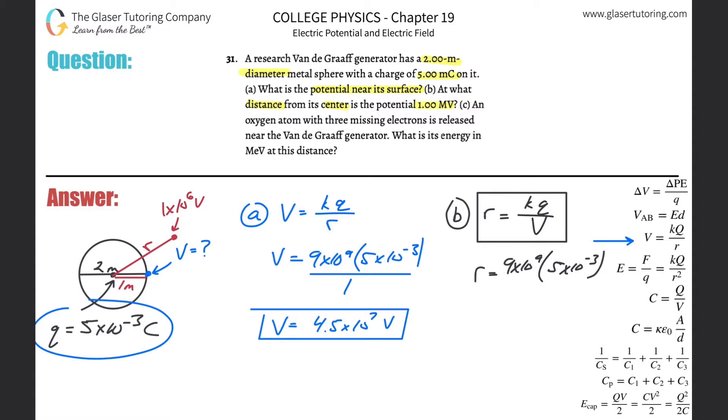You get a little loony after you do so many problems for so long. And then the voltage, which is 1 times 10 to the 6th. Let's plug that into the calculator: 9 times 10 to the 9th multiplied by 5 times 10 to the minus 3, then all divided by 1 times 10 to the 6th. It looks like it's 45, so 45 meters. That's kind of what we expected - not the actual number 45, but we knew it was going to be greater than the 1 meter.